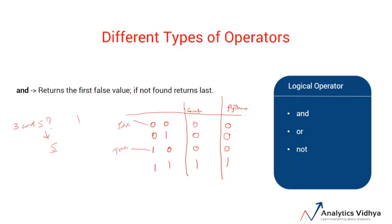Before wrapping up AND operator, let's look at some examples. For example, we can check something like: if 3 is less than 5 AND 5 is greater than 3. We can also do something like 0 AND 3, or true AND false. These are some examples of the logical AND operator.